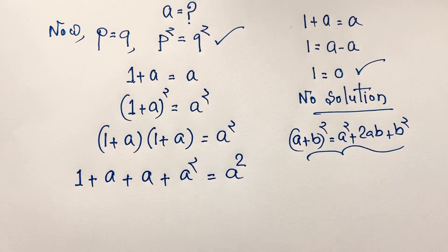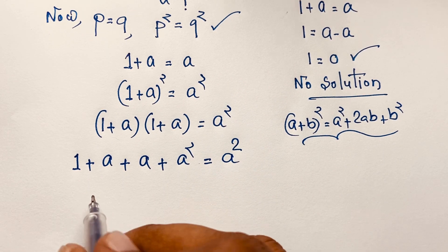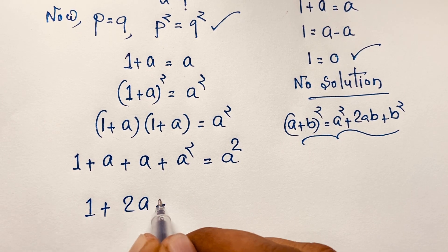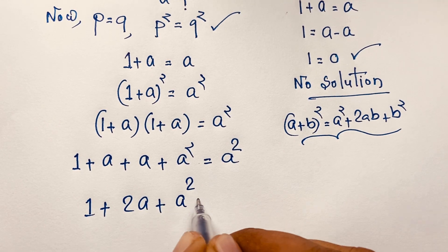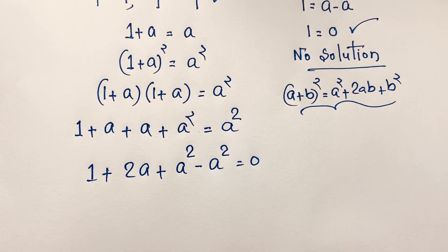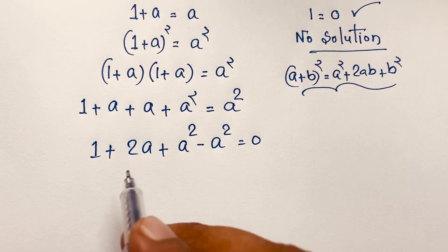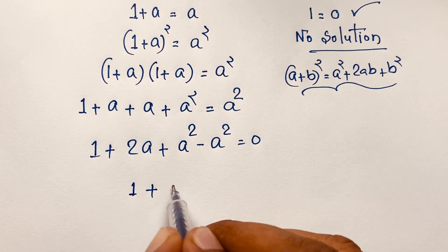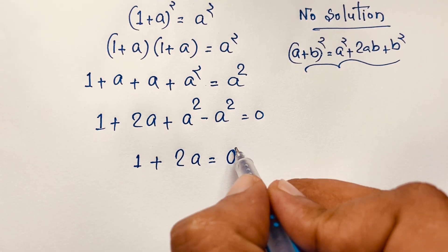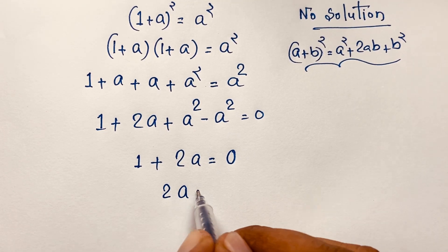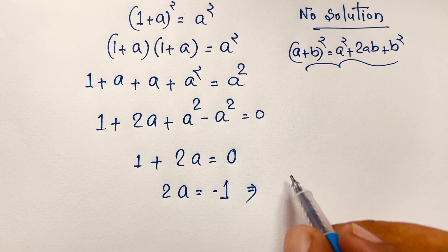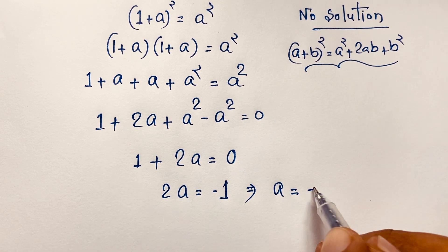Now I move a squared to this side, so it will be 1 plus 2a plus a squared minus a squared equals 0. The a squared minus a squared is 0, so we get 1 plus 2a equals 0, meaning 2a equals negative 1. Dividing both sides by 2, we find a equals negative one-half.